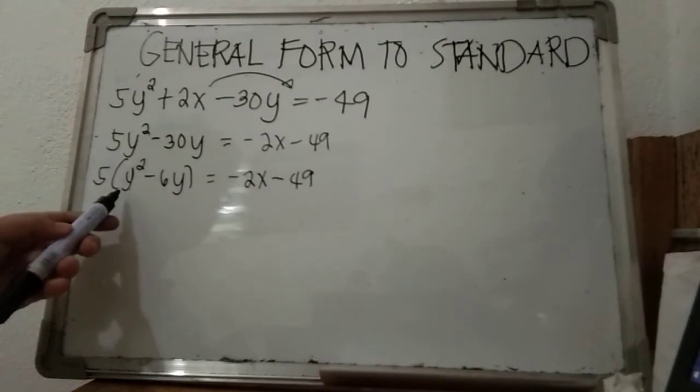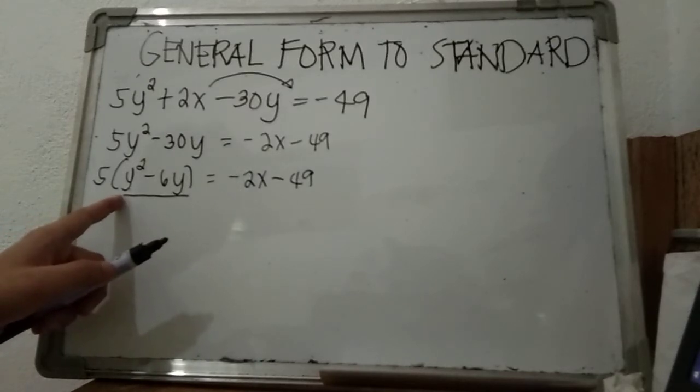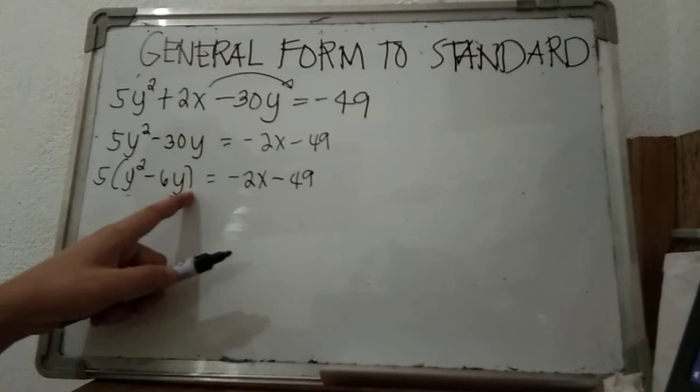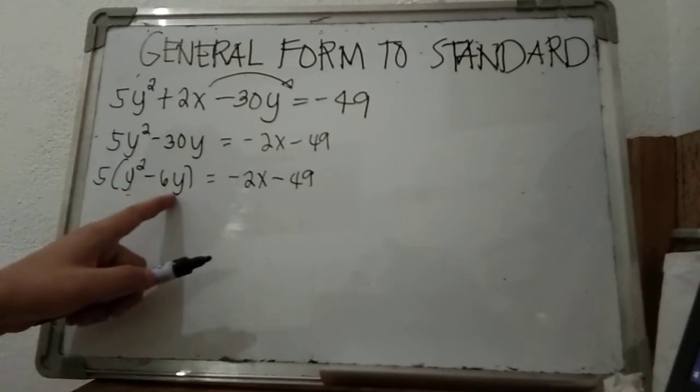We are going to complete the square. How to do that? Pick the numerical coefficient beside the y variable, which is negative 6.